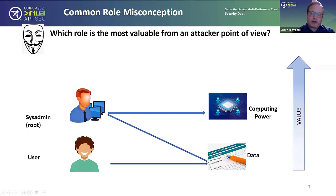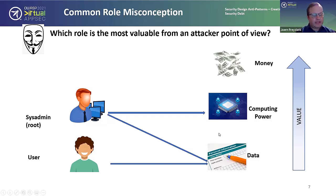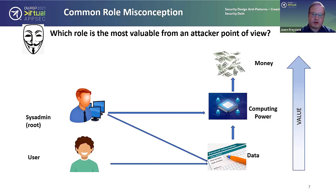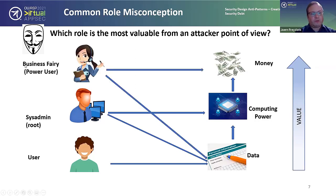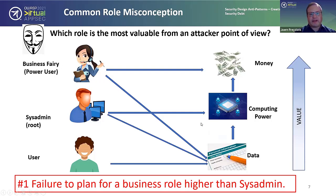From a security perspective though, that's not necessarily where the value for the attacker is. The sysadmin has a lot of computing power and can control a lot of data — capturing that role is valuable and could lead to money. But if you think about who can actually make money most directly: when you call into a company and want a refund, there's usually a business role — I call it the 'business fairy' or power user — that has higher-level direct access to money and also to broad data. For instance, they could change a name across a large number of records.